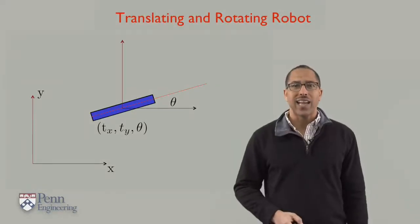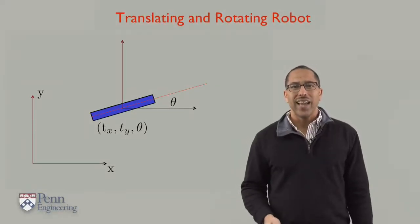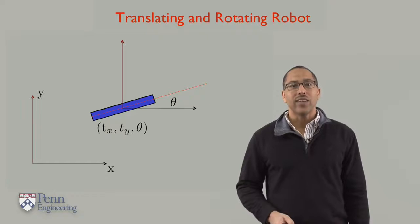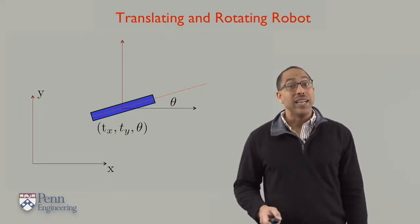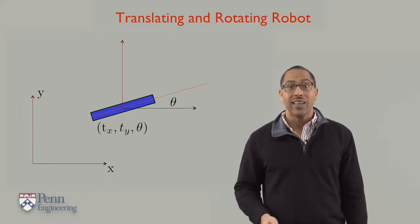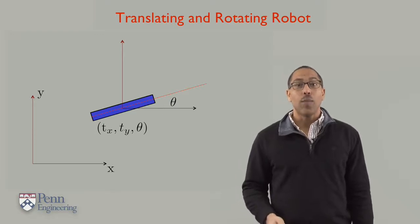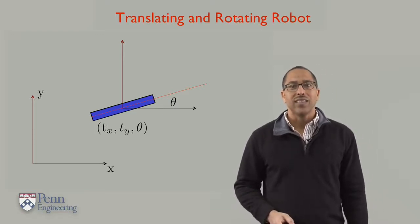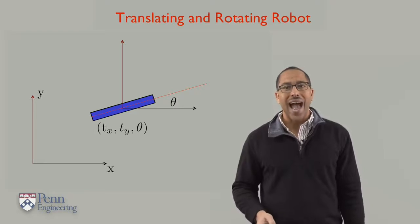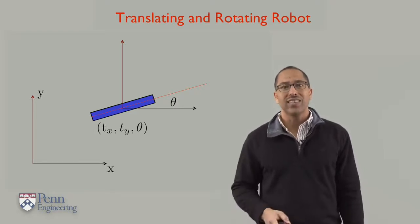Here's a more complicated example. Once again, we are considering a robot that can translate in the plane, but now it can also rotate. This means that our robot now has three degrees of freedom, since a rotational degree of freedom has been added to its initial two translational degrees.